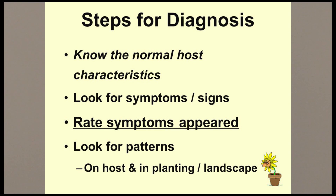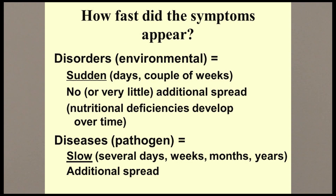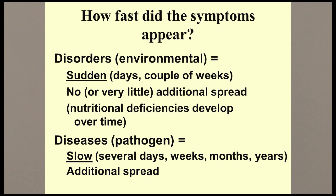How quickly the symptoms appear can often help us determine if the symptoms were caused by a plant pathogen or some non-living factor. In general, if the symptoms appear overnight or in a day or two, the problem is most likely a disorder — due to man-made or environmental factors like over-fertilization, pesticide injury, a late frost, etc. We usually don't see a spread or increase of these symptoms over time. Symptom development takes longer with diseases caused by pathogens, sometimes weeks or even years, and we usually do see additional spread of the symptoms — more spots on different leaves on a single plant, or more nearby plants showing symptoms.